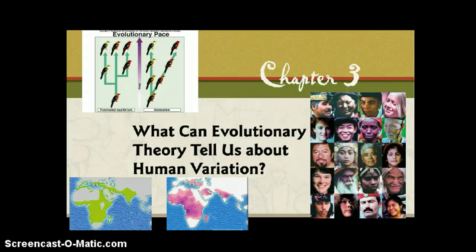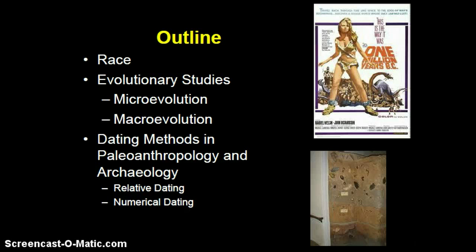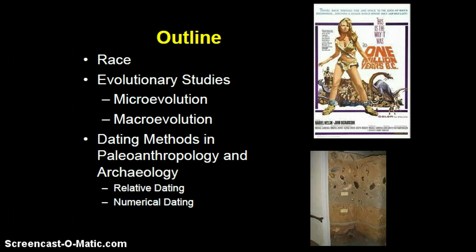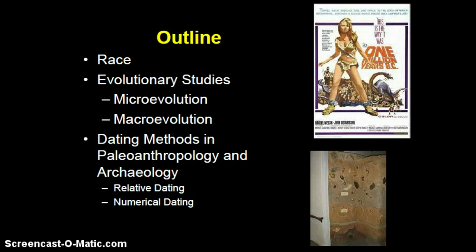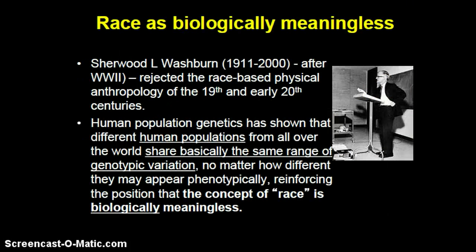In this lecture, I'll discuss Chapter 3 of LaVenda and Schultz's Anthropology: What Does It Mean to Be Human. This chapter looks at evolutionary theory and what it can tell us about human variation. I'm going to start off with a discussion of race, then move into evolutionary studies — both microevolution, meaning small or relatively short period of time in a given species, versus macroevolution, where you have multiple species, new species coming into existence and other species going extinct. Finally, I'll conclude with a discussion of dating methods in paleoanthropology and archaeology, with reference to both relative dating and numerical dating.